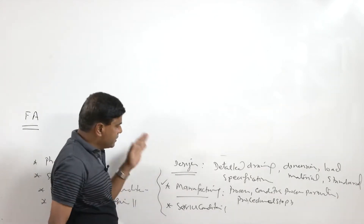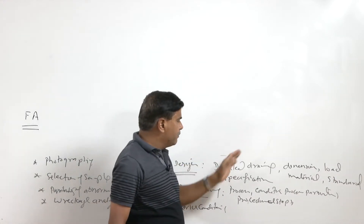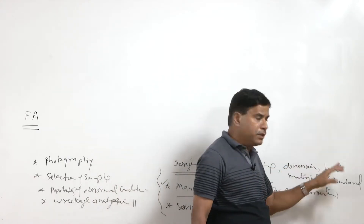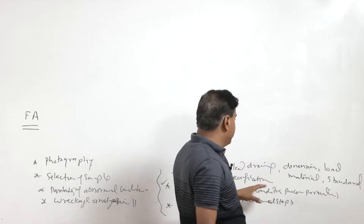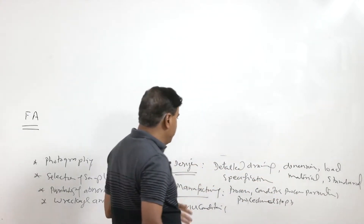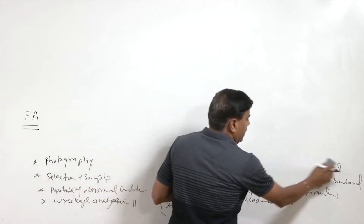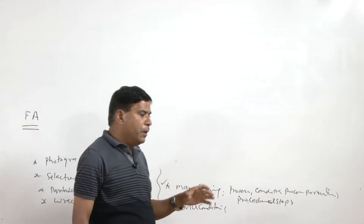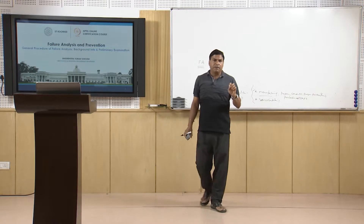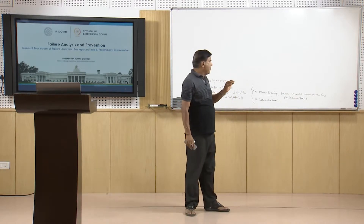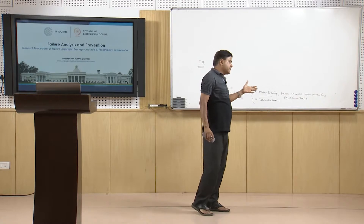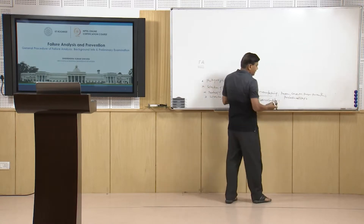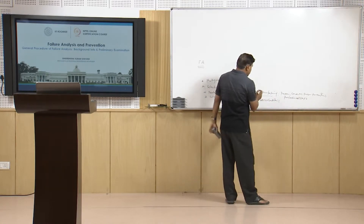As far as design is concerned, we need to get information through detailed drawings regarding the dimensions, the loading for which it has been designed, the material of which the component should have been made, and the specifications and standards according to which it should have been made. In light of this information, subsequent characterizations will help us know whether the dimensions are proper, the material is proper, and whether it has the correct composition and follows the particular standard.